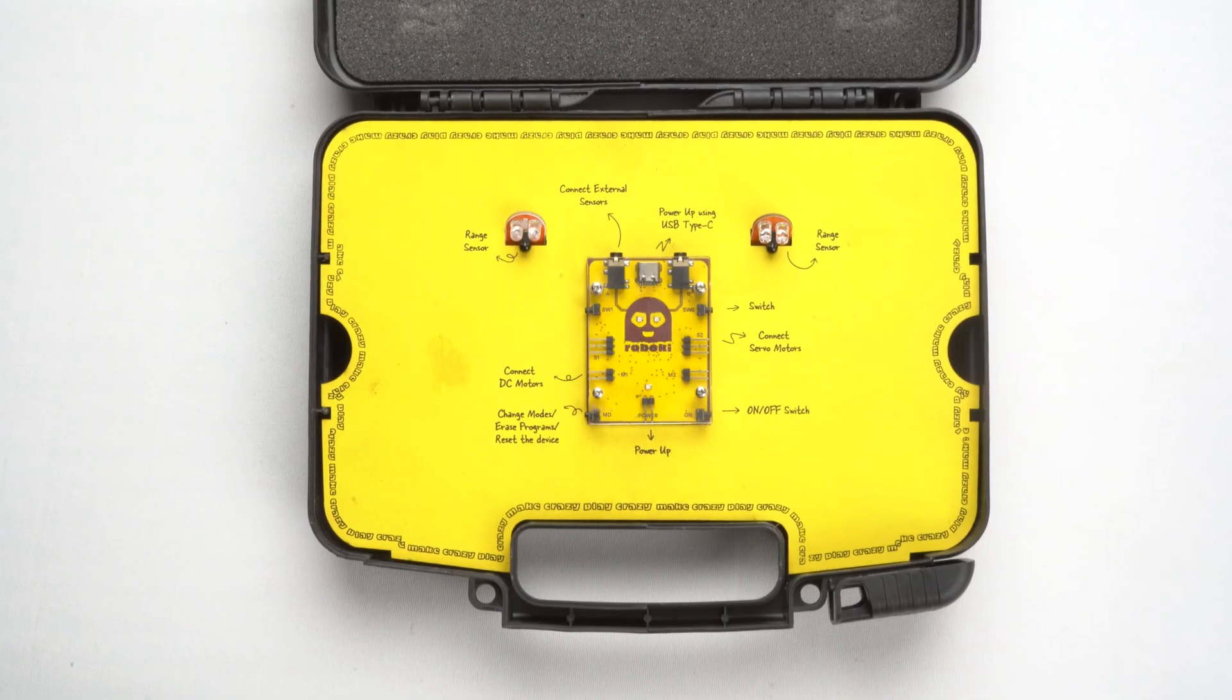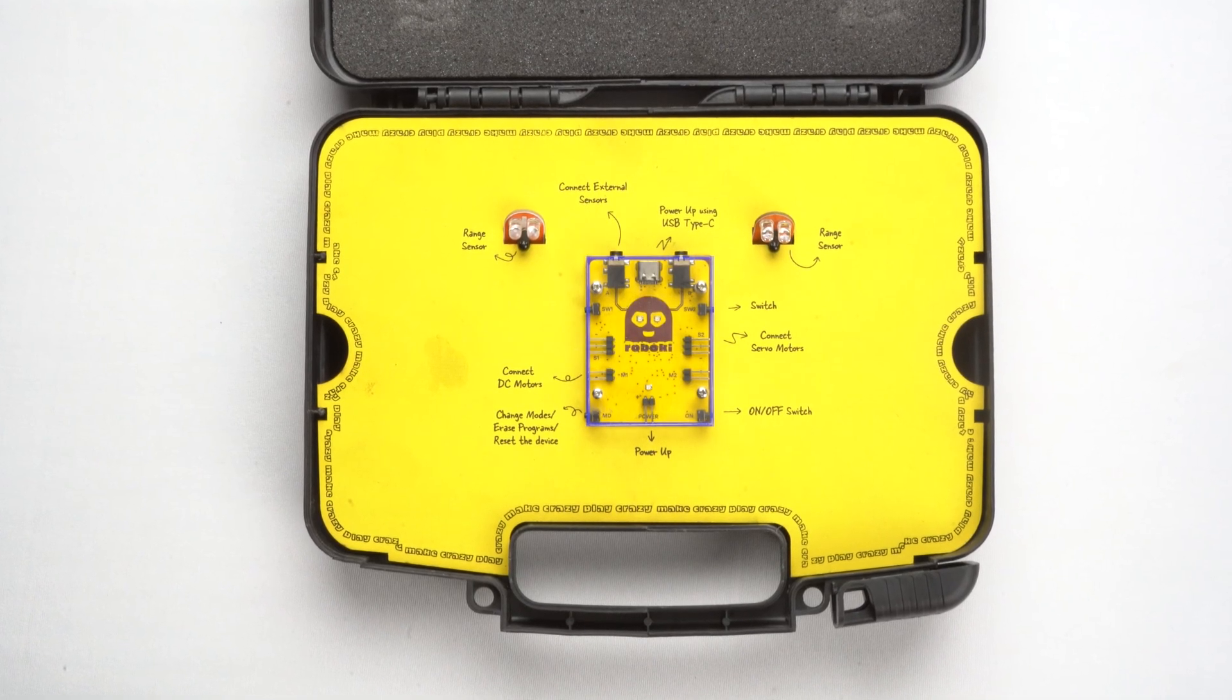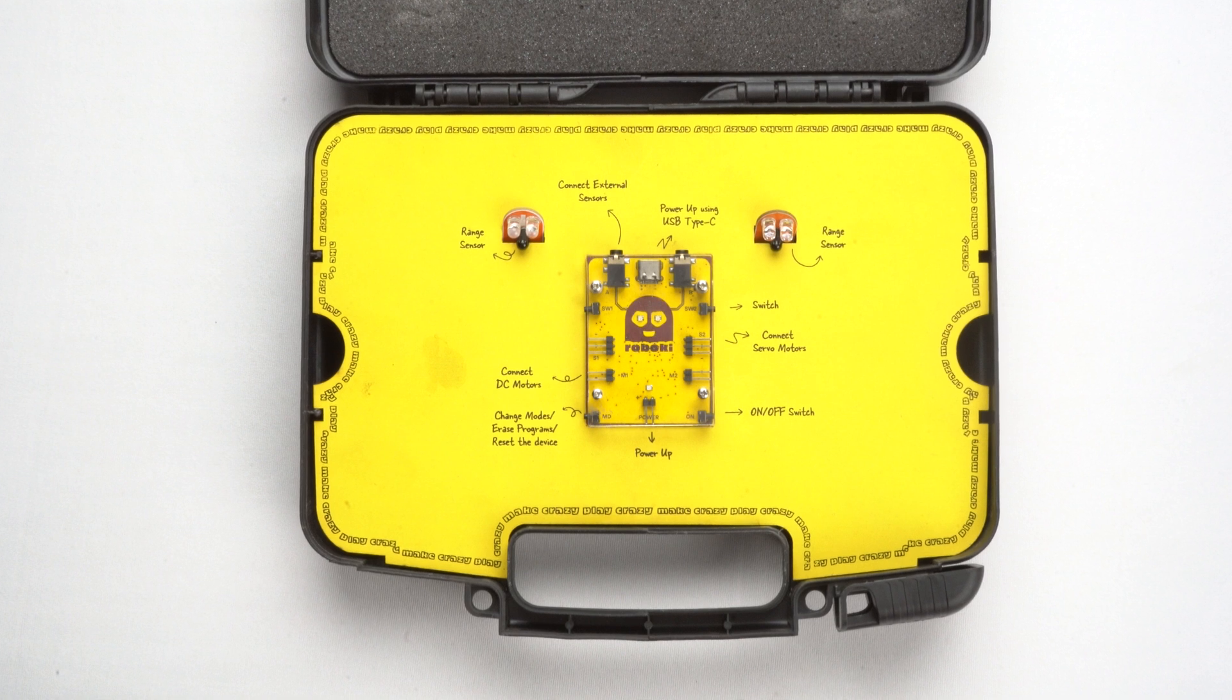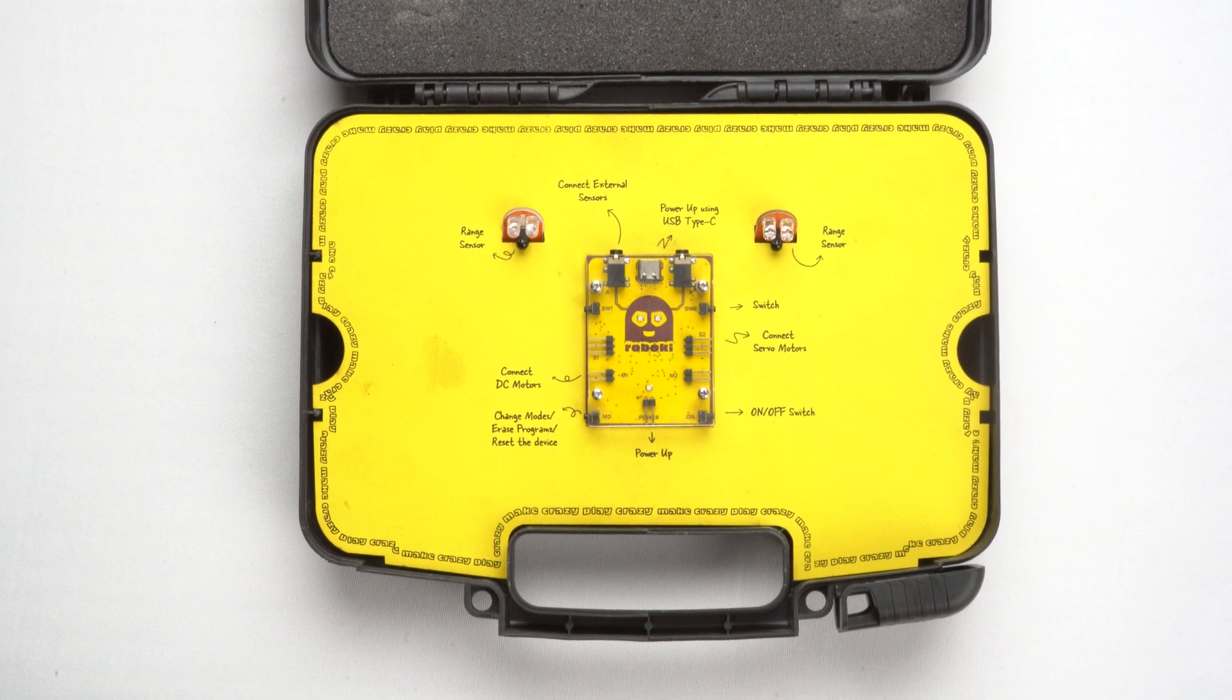First take a look inside the box. You will see RoboKey and two sensors here. Now let's break down what each part does and how it works.